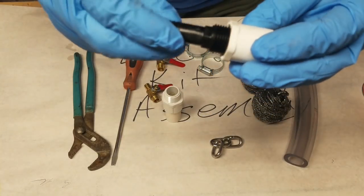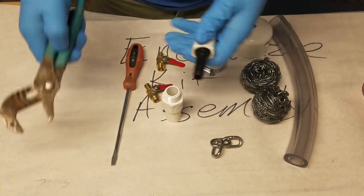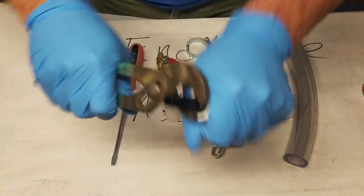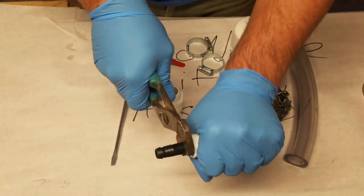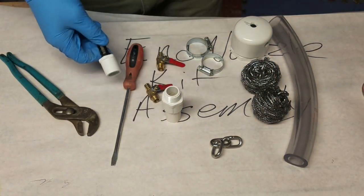You just take these two pieces and thread them together. It's plastic on plastic. It seals real nice, doesn't have to be too tight. It goes in just like that.